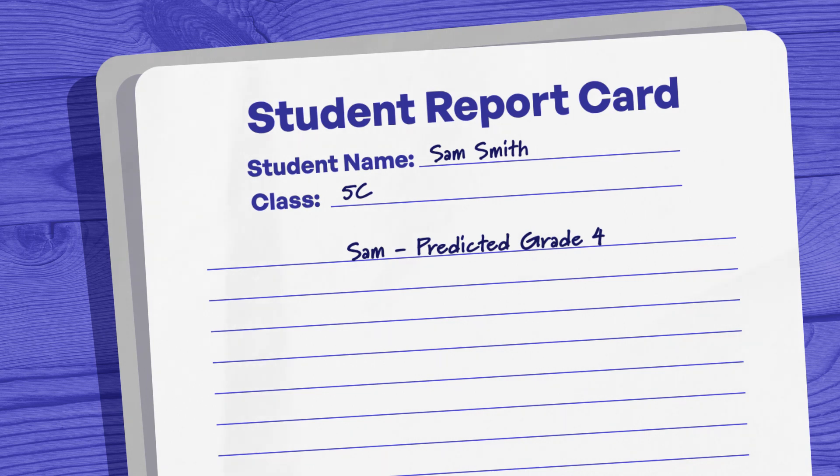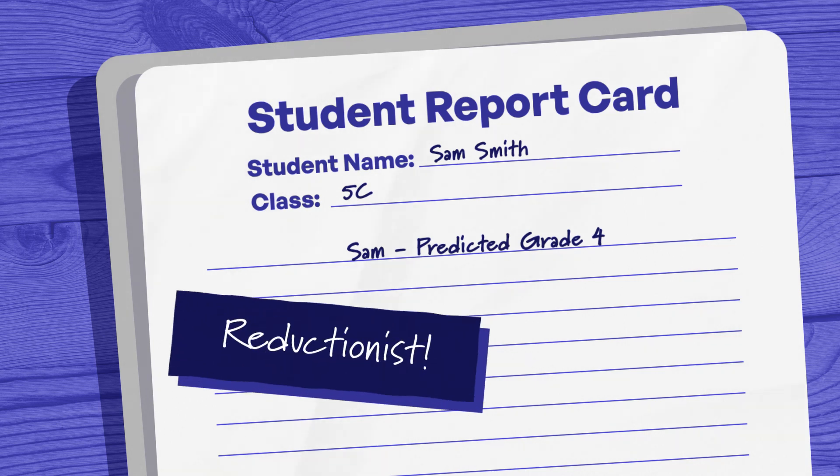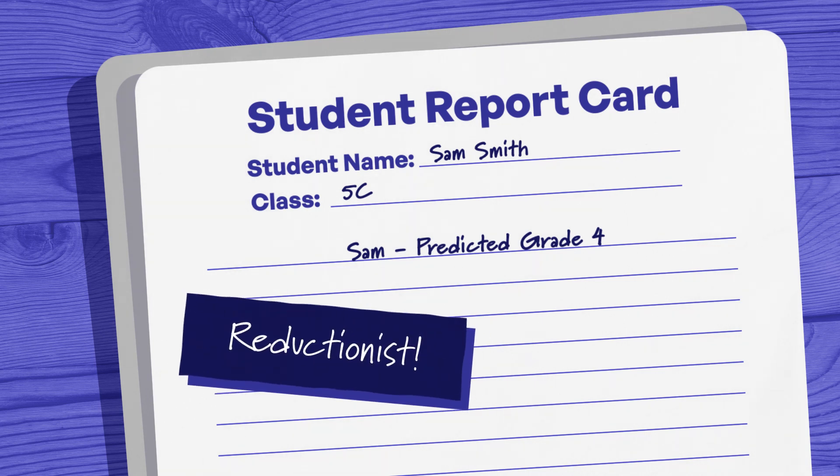Sam — predicted grade: four. This is a reductionist description of the student. A predicted grade of four doesn't tell me if Sam's making an effort or achieving his full potential, and it doesn't tell me if he's getting better or worse. It doesn't tell me anything about the impact on other learners around him.